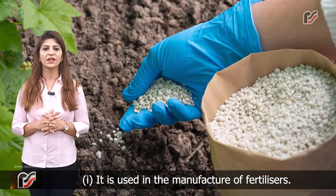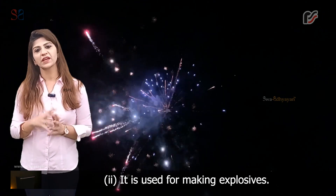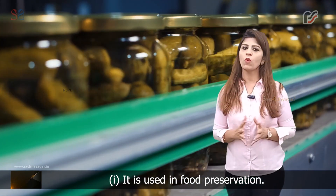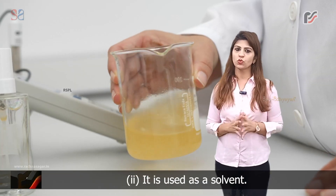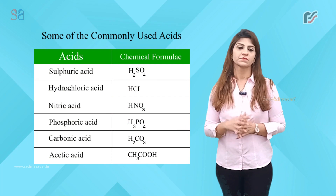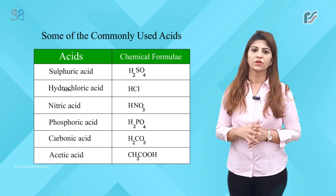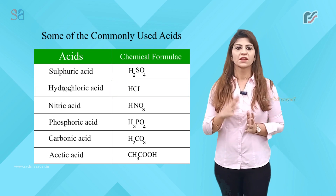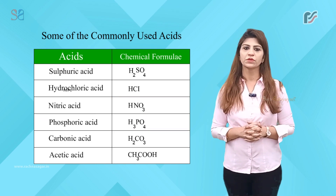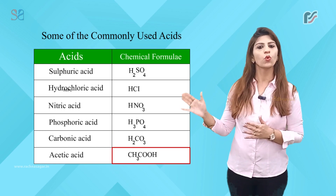Nitric acid: (1) it is used in the manufacture of fertilizers; (2) it is used for making explosives. Acetic acid: (1) it is used in food preservation; (2) it is used as a solvent. Some commonly used acids and their chemical formulae: sulfuric acid H₂SO₄, hydrochloric acid HCl, nitric acid HNO₃, phosphoric acid H₃PO₄, carbonic acid H₂CO₃, acetic acid CH₃COOH.